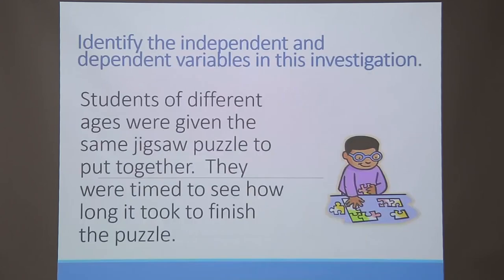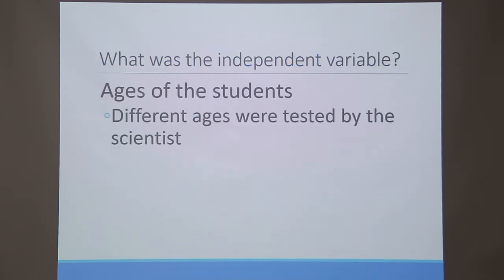Here is the dependent variable. Once you are clear with the independent and dependent variables, these are some examples given for them. Once you are clear with what you are about to find — the dependent variable — based on the literature review you can identify the various independent variables that are going to influence the findings of your research, that is your dependent variable.